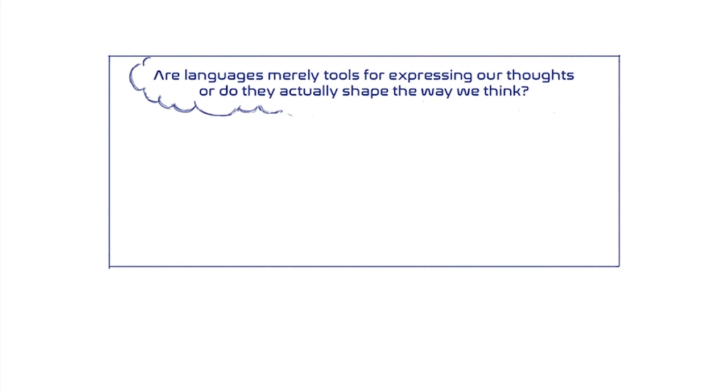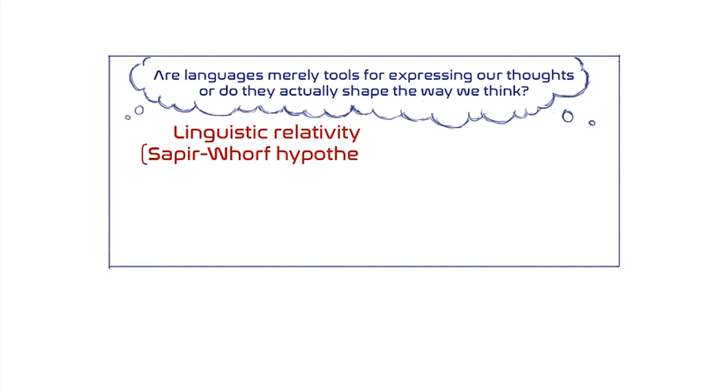The hypothesis that our mental activity is at least to some extent relative to and dependent on the language that we speak is called the linguistic relativity hypothesis. It's often associated with the names of Benjamin Lee Whorf and his mentor, Edward Sapir, and is commonly referred to as the Sapir-Whorf hypothesis.